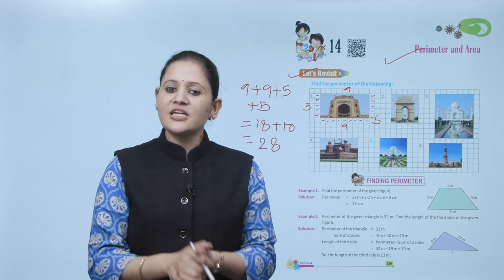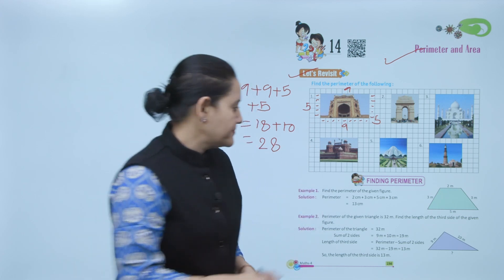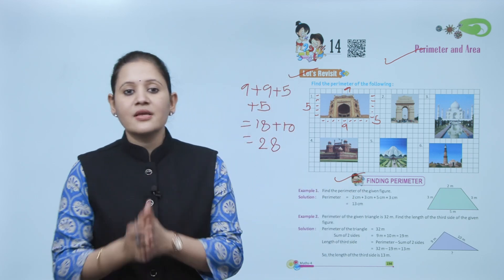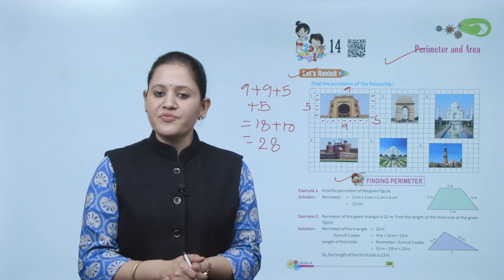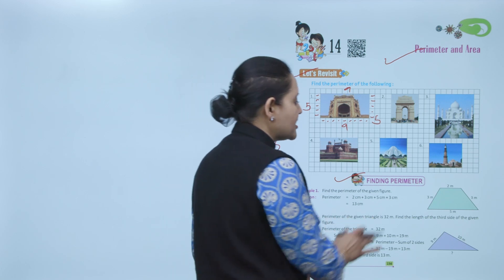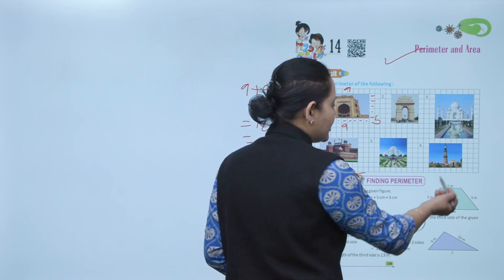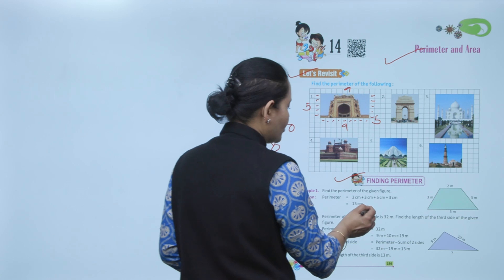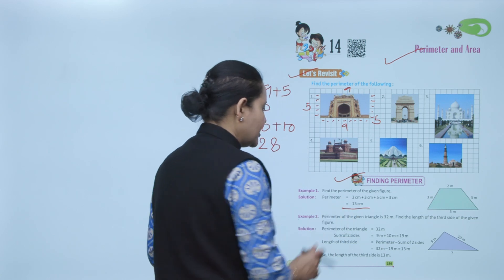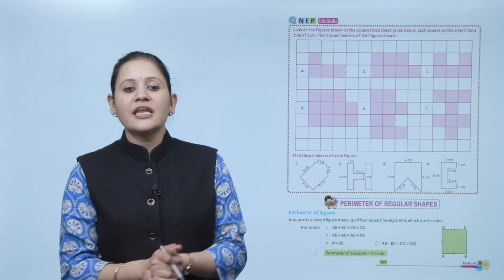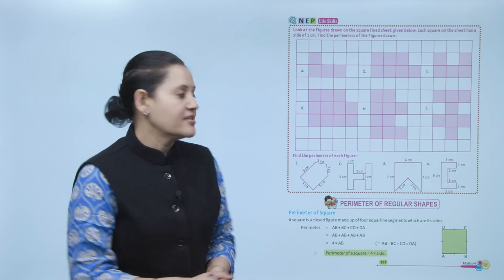Next, find the perimeter of the given figure. Perimeter means sum of all sides: 3 meter plus 2 meter plus 3 meter plus 5 meter, total is 13 centimeters.